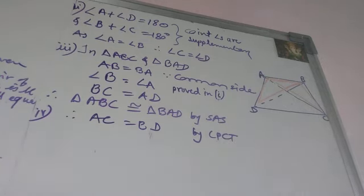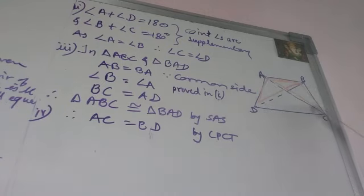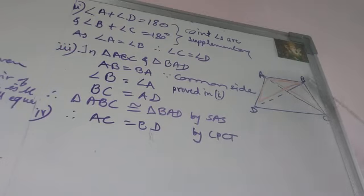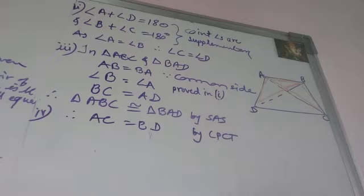So in an isosceles trapezium, the base angles are equal (angle A equals angle B and angle D equals angle C), and the diagonals are equal. These are the key properties of an isosceles trapezium that we have derived here.